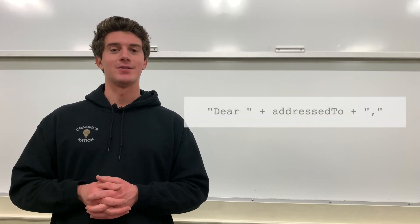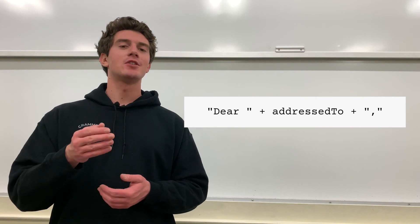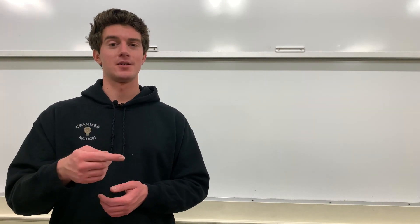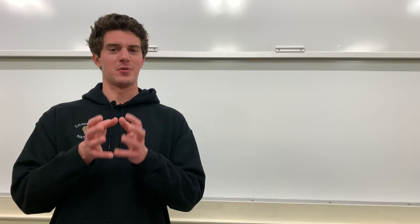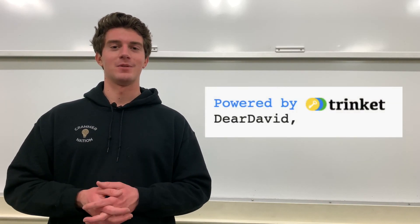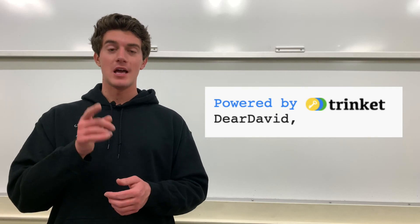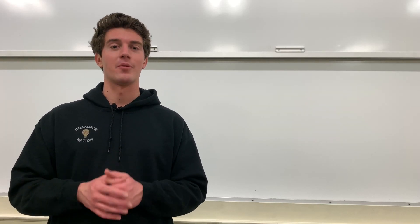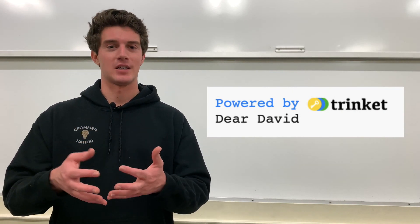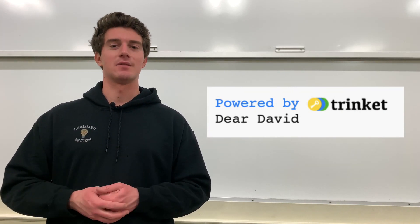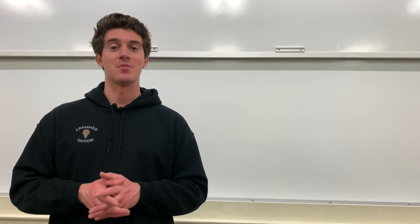Another question you're probably asking is: what's up with the extra space after 'dear'? Imagine address_to equals David. If we didn't have the space there, our greeting would end up looking weird — we'd have 'dearDavid' with no space separating them. So include that space to make it look proper. The same applies to the comma at the end — without it, our greeting is not complete and we can't start the rest of the letter. That's the purpose behind each aspect of this concatenation example.